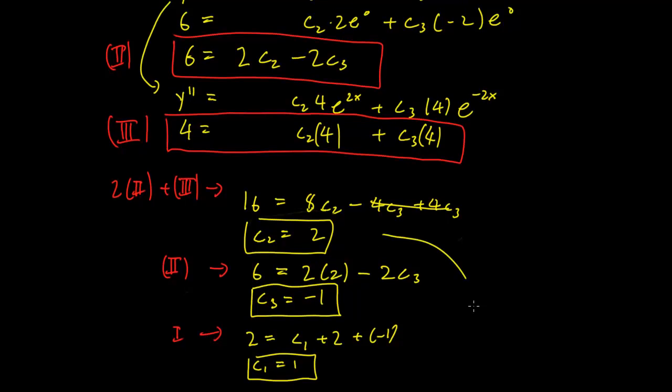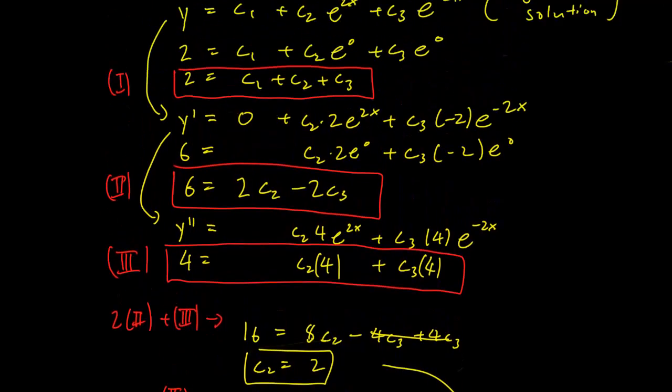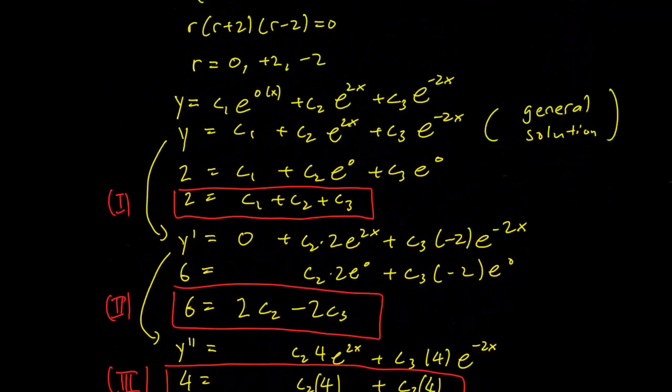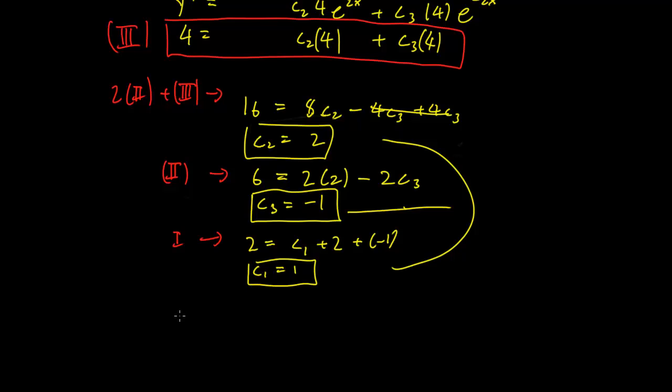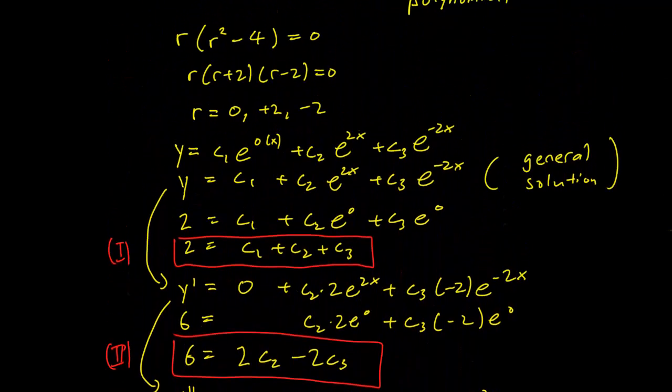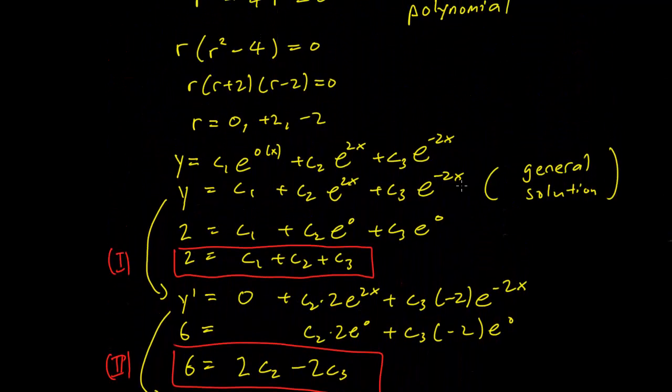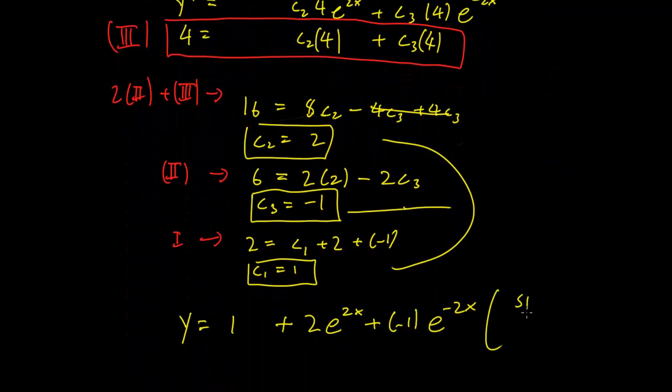And these are the solutions to our specific problem. And we have to plug them in the general solution. So our specific solution is just going to be y = 1 + 2e^(2x) - e^(-2x). And that solves our initial value problem.